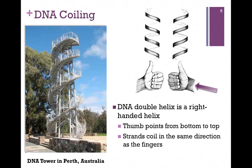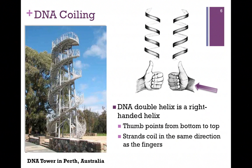The DNA double helix is a right-handed helix. We determine that by pointing our thumb in the direction of the DNA molecule from bottom to top, and the strands coil in the same direction as the fingers — that determines whether it's a left or right-handed helix. You simply have to remember that our DNA double helix is a right-handed helix. In the picture on the far left, we have the DNA tower in Perth, Australia. Scientists often describe the DNA double helix as a spiral staircase, with the rail being the phosphodiester backbone and the steps being the perpendicular bases.